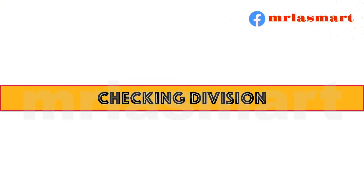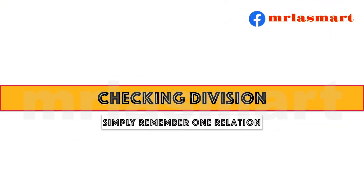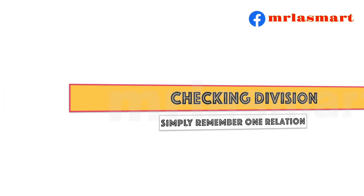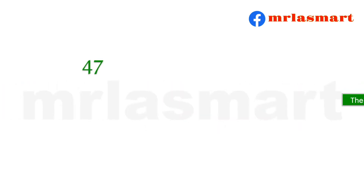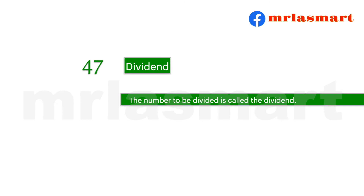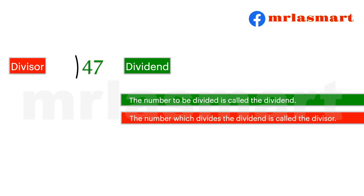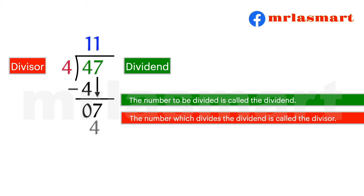Checking division. Simply remember one relation. The number to be divided is called the dividend. The number which divides the dividend is called the divisor. The result is called the quotient.